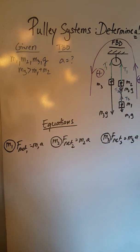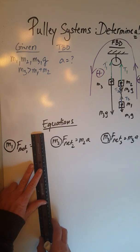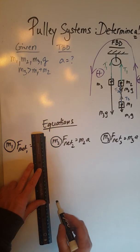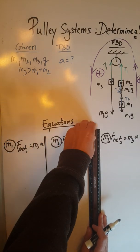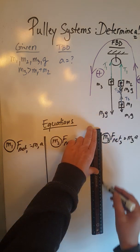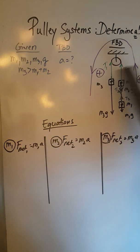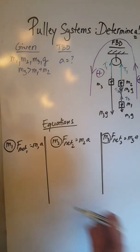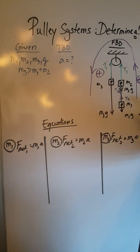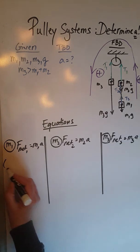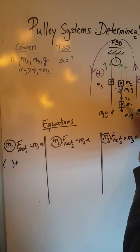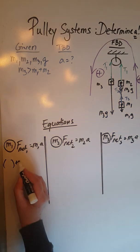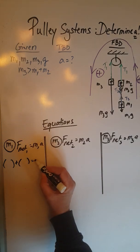Now we are going to remember that F_net is the vector sum of all the forces, so therefore we are going to consider the vectors for each of these objects and their directions according to the positive direction that we have in the diagram up there. For F_net_1, we have a positive T2 that will be added to a negative M1G to give me M1A.